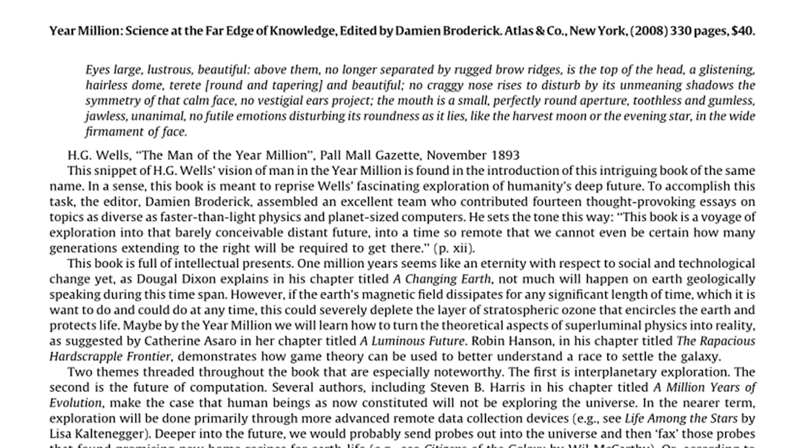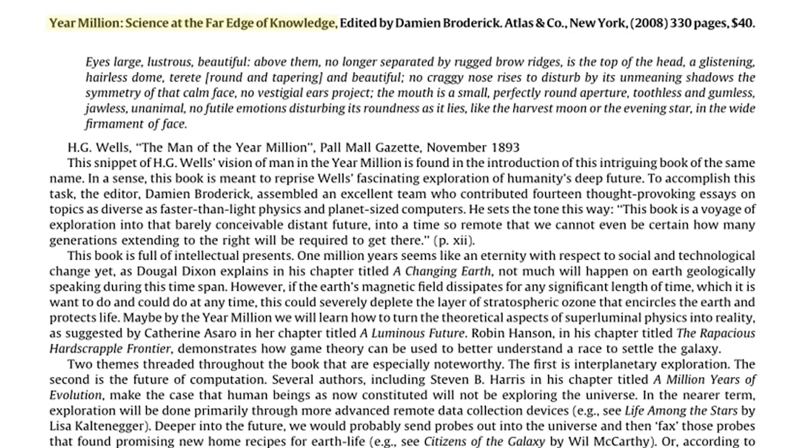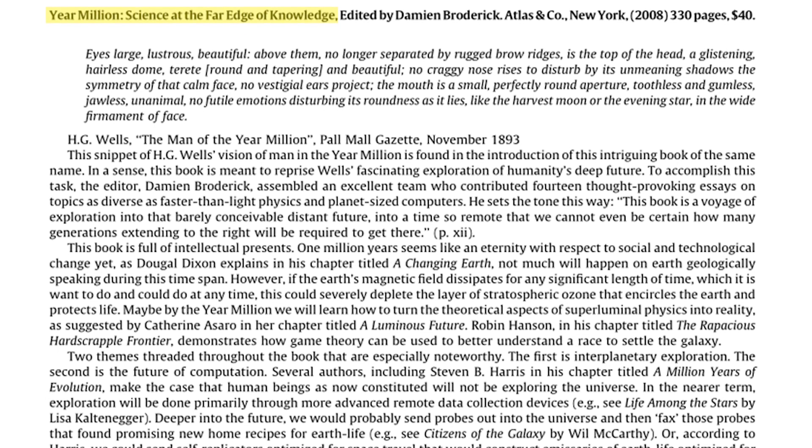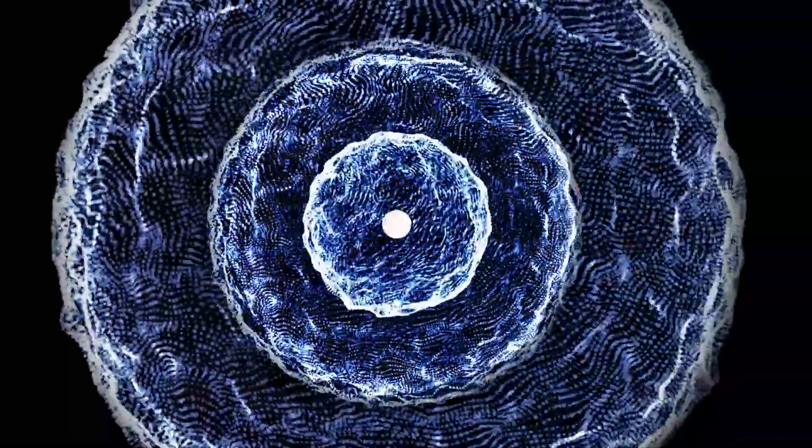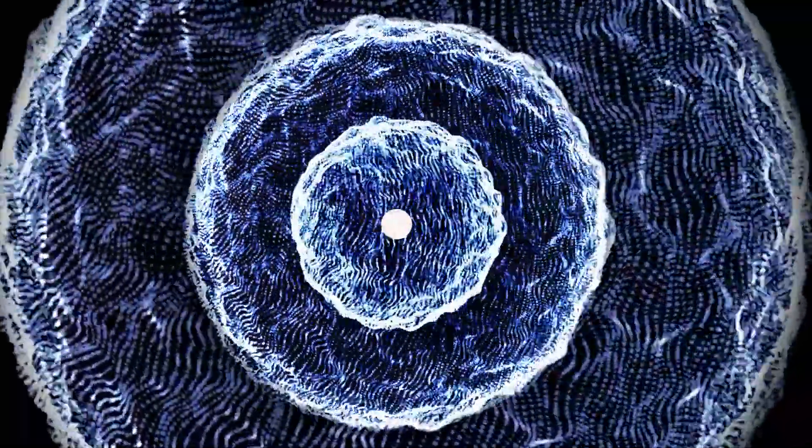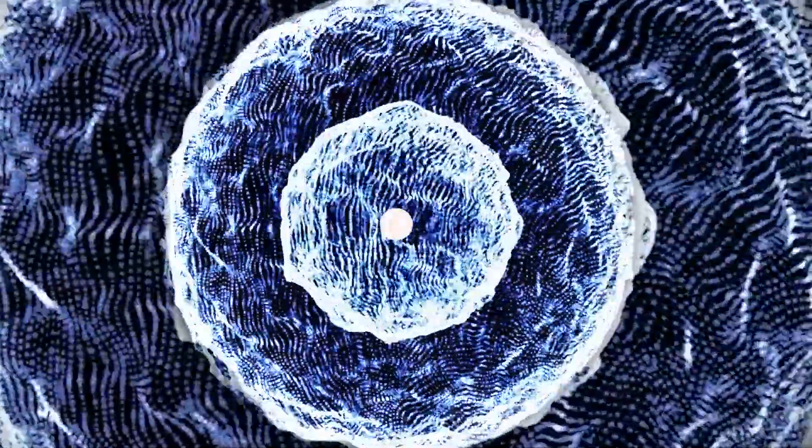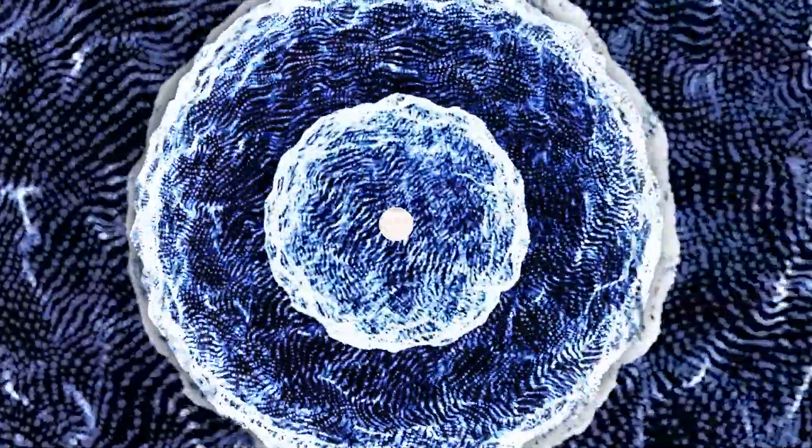But Robert Bradbury extended this idea in his anthology, Year Million, Science at the Far Edge of Knowledge. He proposed that far in the future, we would have a technology to create a set of nested shells around a star, each of which will essentially be a Dyson Sphere.